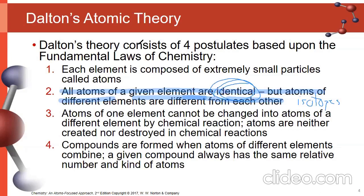Postulate three: the atoms of one element cannot be changed into atoms of another element by chemical reaction — atoms are neither created nor destroyed in chemical reactions. This is still verified today. The key word is chemical reaction. Our conservation law upholds this. Some might ask about nuclear reactions — in a nuclear reaction, atoms of one kind can turn into atoms of another kind, but that is a nuclear process, not a chemical one. The atom itself is physically breaking down into different pieces, so that is a nuclear reaction, not a chemical reaction.